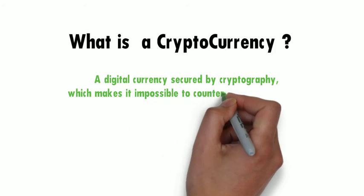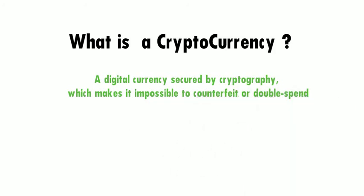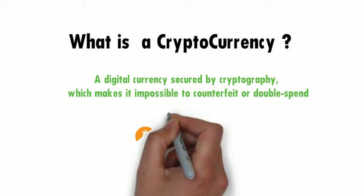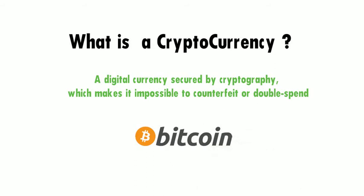A cryptocurrency is a digital or virtual currency that is secured by cryptography, which makes it nearly impossible to counterfeit or double spend. Many cryptocurrencies are decentralized networks based on blockchain technology. Bitcoin continues to lead the pack of cryptocurrencies in terms of market capitalization, user base, and popularity.